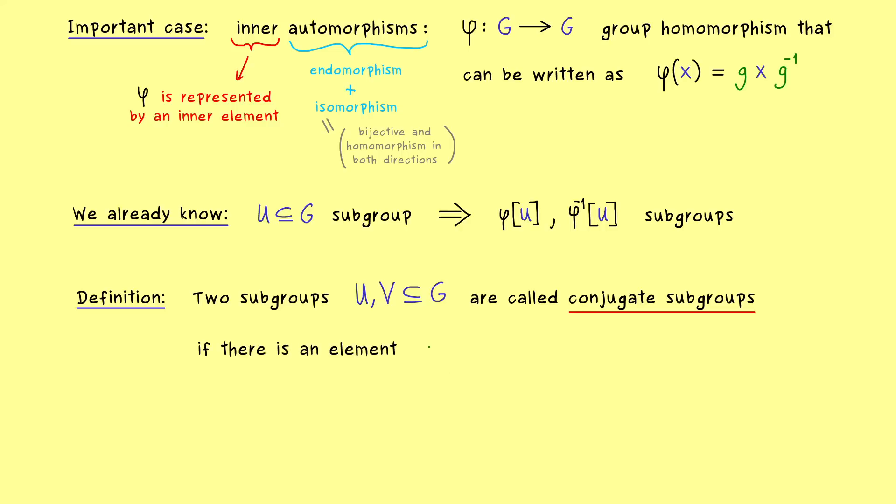Hence more concretely we need the existence of an element g in the group capital G such that V can be written as g times U times g inverse.